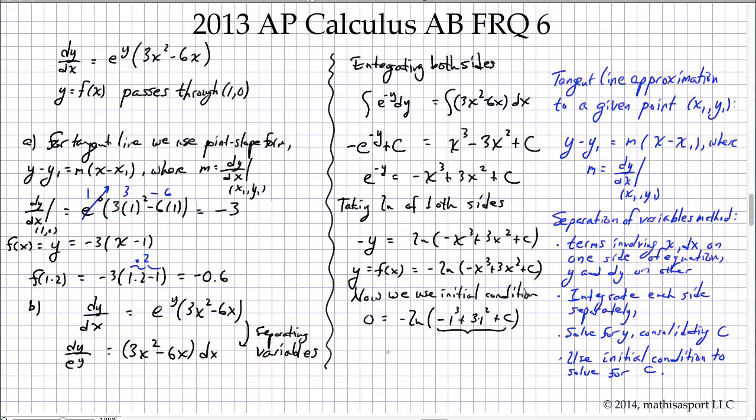What would make -ln of something equal to 0? The input to the ln function would have to be 1. And so we say that -1 + 3 + c = 1. -1 + 3 is 2, to get down to 1 implies that c = -1. So our final solution f(x) is -ln(-x³ + 3x² - 1).